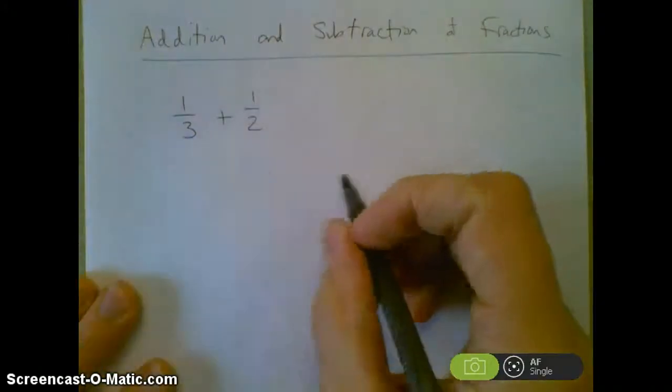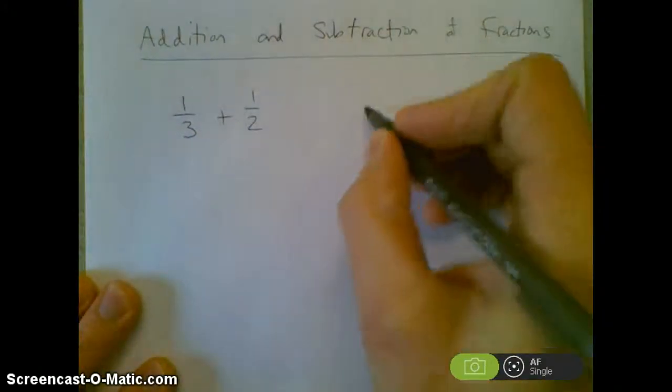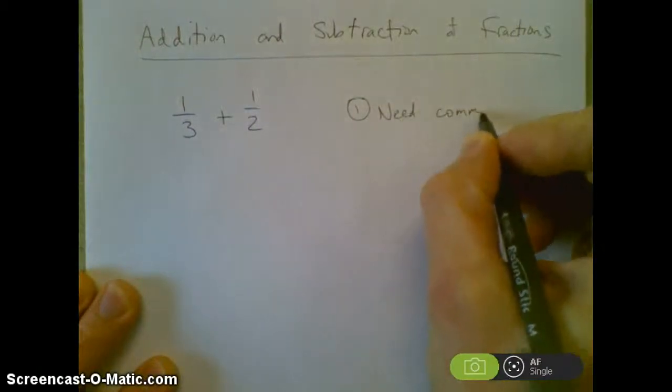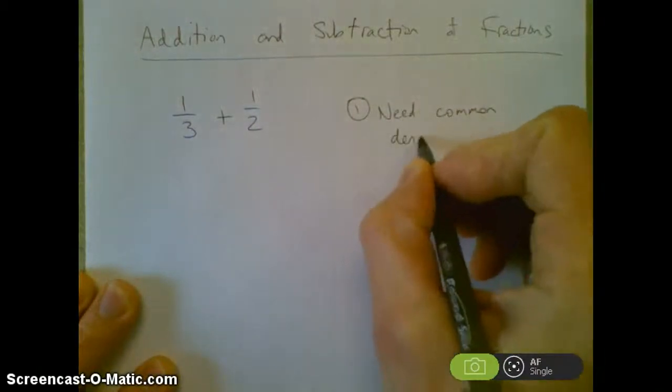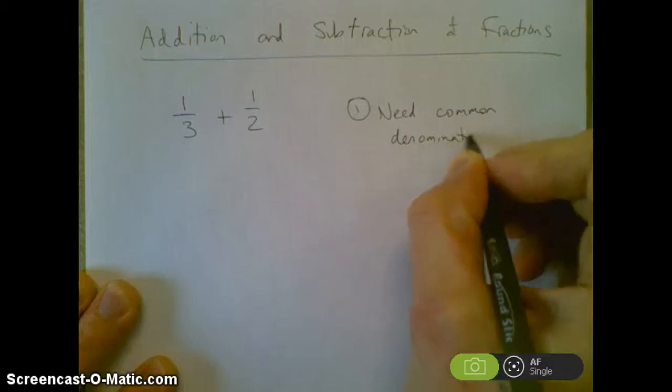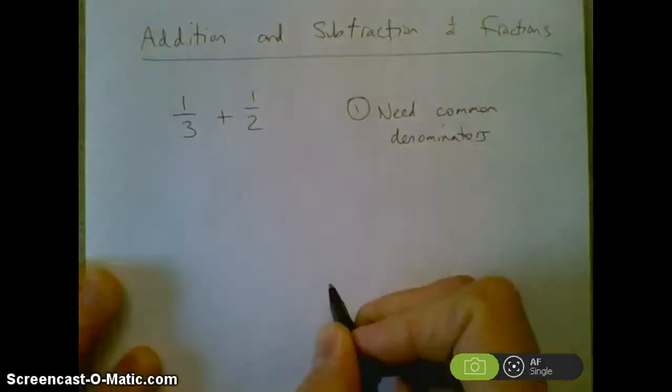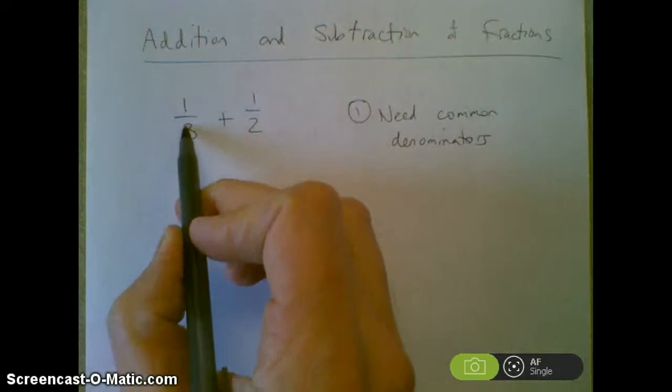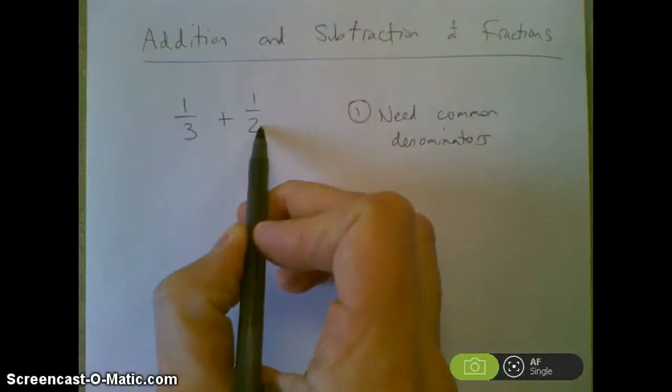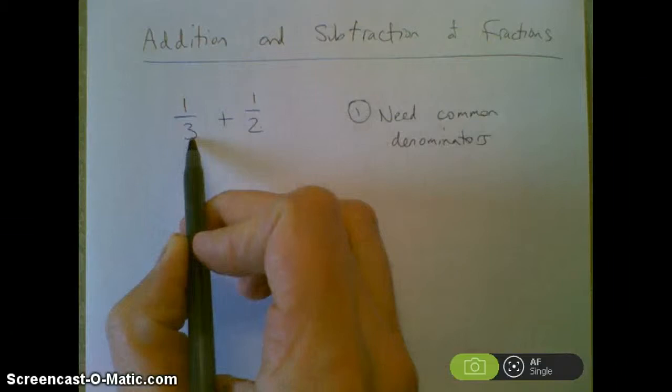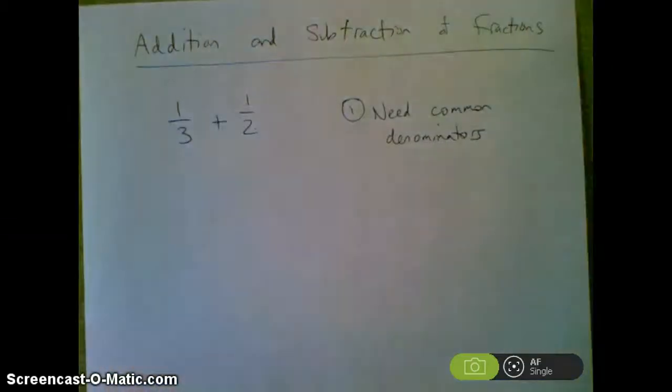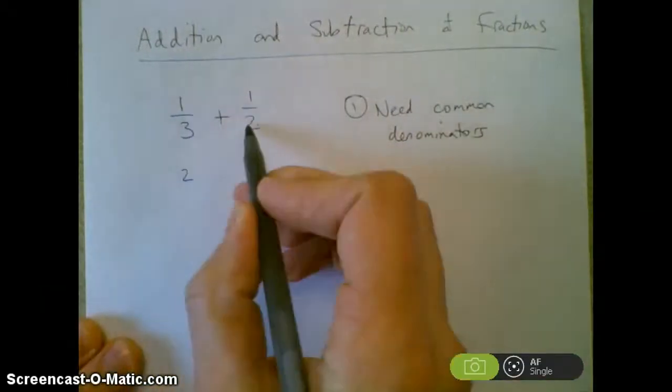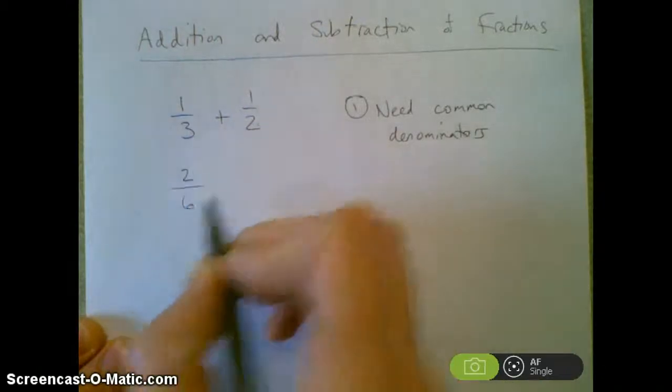I can't add it up because I don't have common denominators. So the first thing is you need common denominators. What I can do is I can multiply these two numbers by that denominator and these two numbers by the other denominator. So that I have 1 times 2 is 2, 3 times 2 is 6,